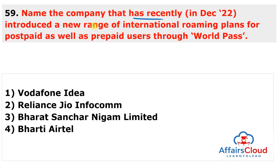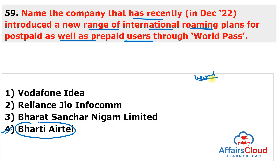Question 59: Which company introduced a new range of international roaming plans for postpaid and prepaid users through 'World Pass'? The answer is Bharti Airtel. Airtel's World Pass plans are functional across 185 countries, allowing users traveling to two or more countries to use a single roaming pack without buying a new one.